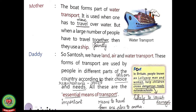Underline 'travel' — meaning: move. But when a large number of people have to travel together, they use a ship. Underline 'together' — meaning: jointly. As the size of the ship is very big, a large number of people can travel together. Daddy says: 'Santosh, we have land, air, and water transport. These forms of transport are used by people in different parts of the country according to their choice and needs.' Underline 'choice' — meaning: option. Underline 'needs' — meaning: requirements, or in Hindi, zarurte.